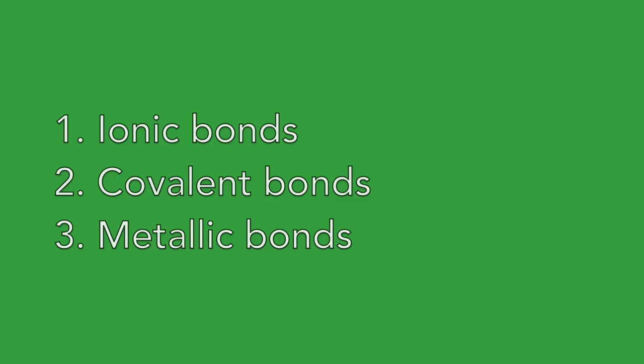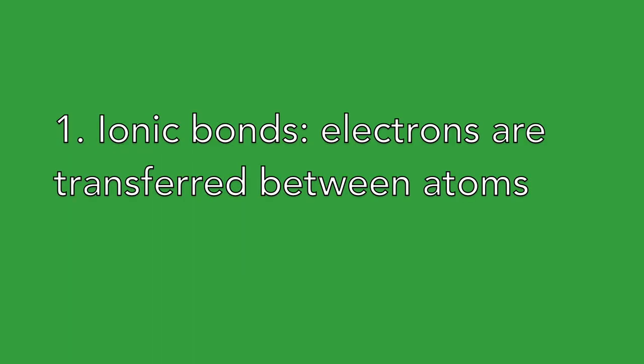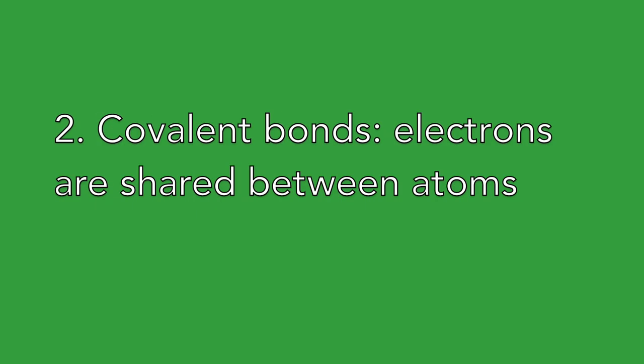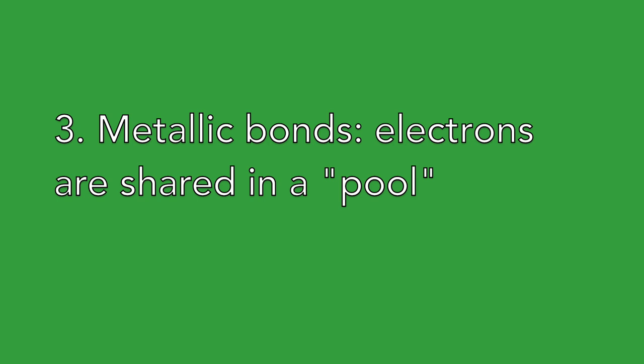We will begin by classifying chemical bonds into the following categories: ionic bonds, covalent bonds, and metallic bonds. Each of these types of bonds will focus on the electrons. For ionic bonds, electrons are transferred between atoms. In covalent bonds, the electrons are shared between the atoms. And in metallic bonds, the electrons are shared in a pool.